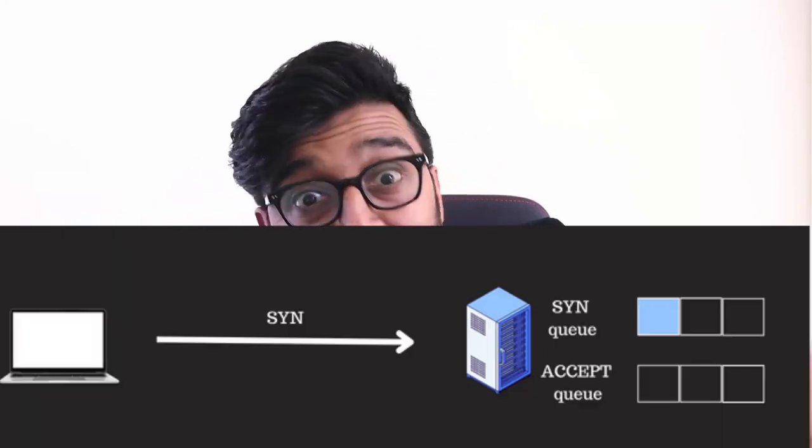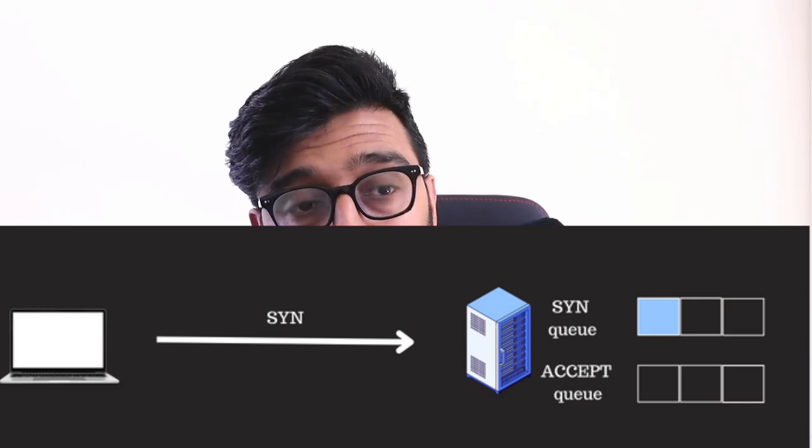That file and that socket is not bound to a process per se — it can be shared with 10 processes, which means 10 processes can read and accept connections from that socket. When a connection is attempted and a SYN request comes in with a target IP address and port matching the socket listener, that SYN entry is added to the SYN queue, which is a dedicated queue just for that listener.